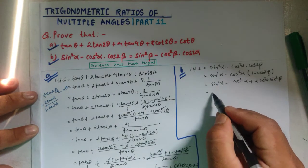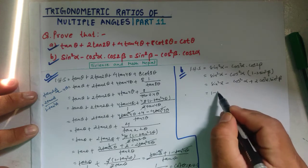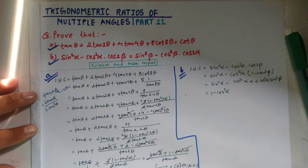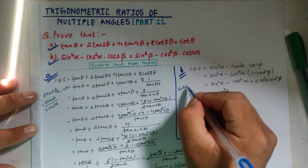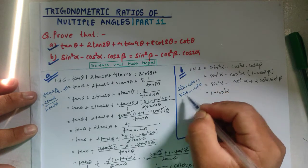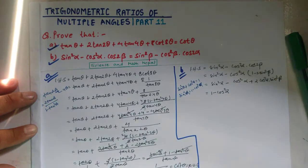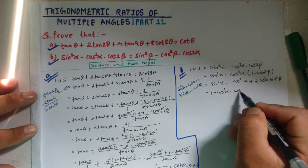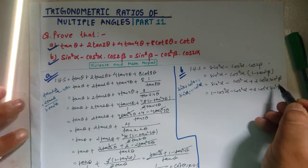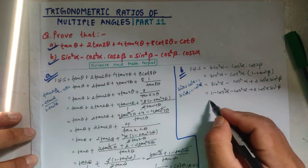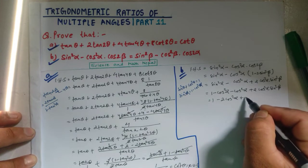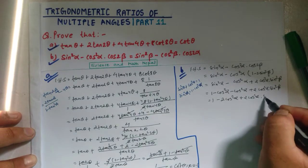Expanding: sin² α times 1 minus 2 sin² β, minus cos² α times 1 minus 2 sin² β. This gives sin² α minus cos² α, multiplied out as cos² α into 1 gives minus cos² α, and minus minus gives plus cos² α into 2 sin² β.